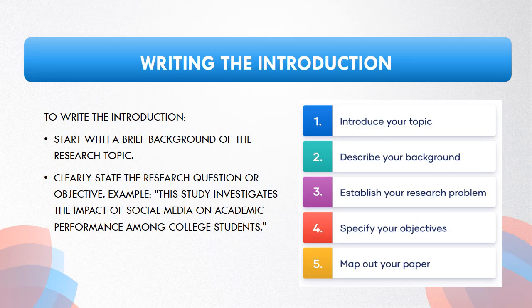To write the introduction of your abstract, begin by providing a succinct background of the research topic to establish context. Clearly state the research question or objective to outline the study's purpose. For instance, you could start with: 'This study examines the influence of social media on academic performance among college students,' setting the stage for readers to grasp the focus and significance of your research.